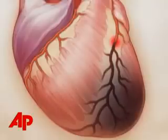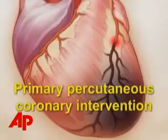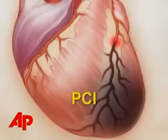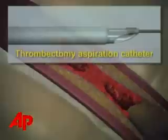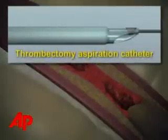Early reperfusion by means of primary percutaneous coronary intervention, or PCI, has reduced mortality from acute myocardial infarction to less than 5%. A new PCI technique uses a thrombectomy aspiration catheter,